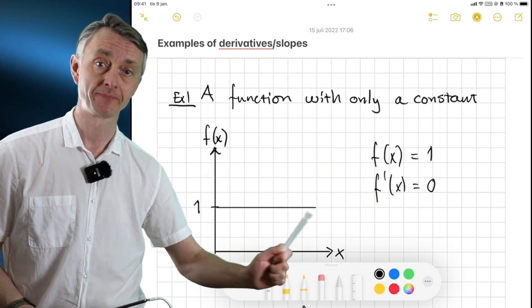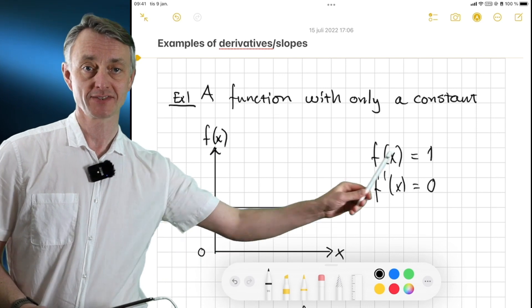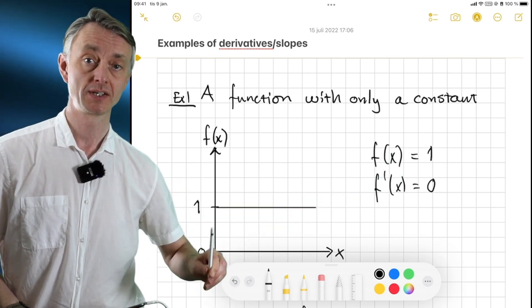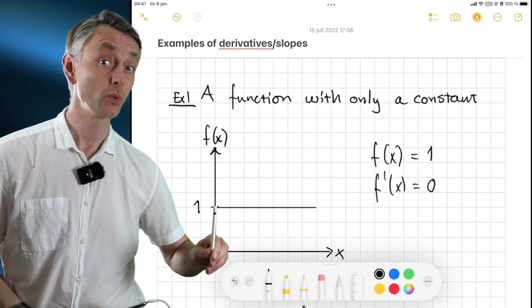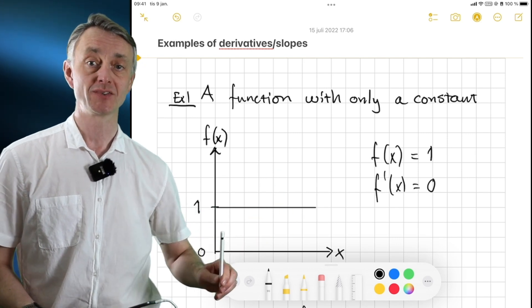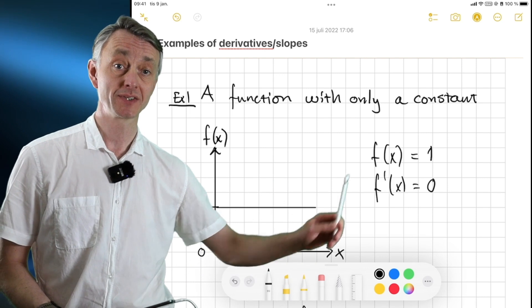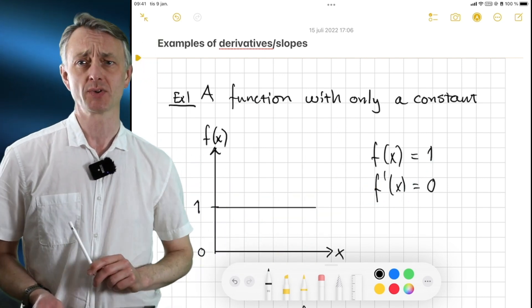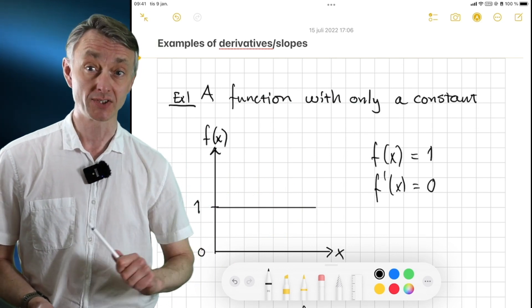Down here I have x. We can see that this function here, when x is equal to 0, then the function's value is 1. And the same is true for any value of x, because x doesn't come into this. And then we come to the next question. What is the derivative of this function?